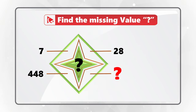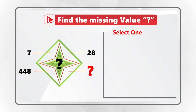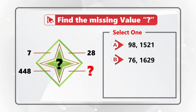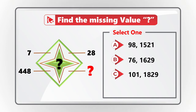You have four different choices for the final value. Choice A: 98 and 1521. Choice B: 76 and 1629. Choice C: 101 and 1829. And Choice D: 112 and 1792.